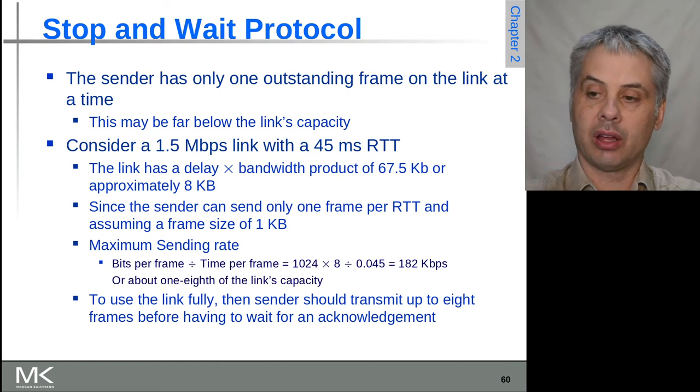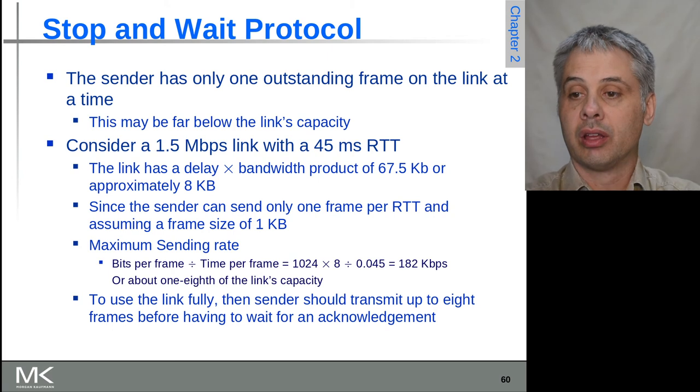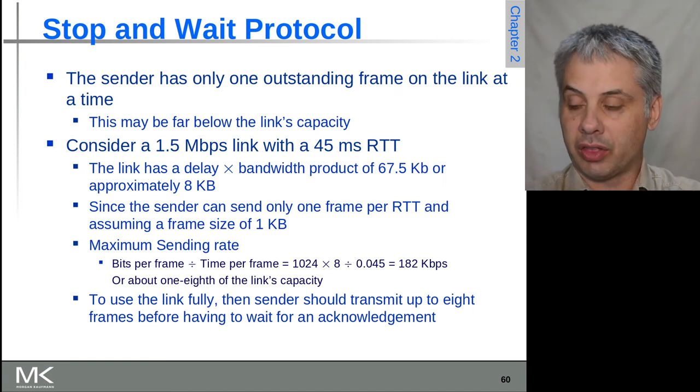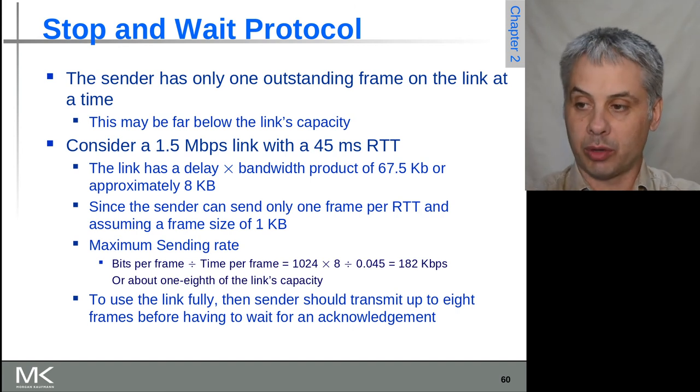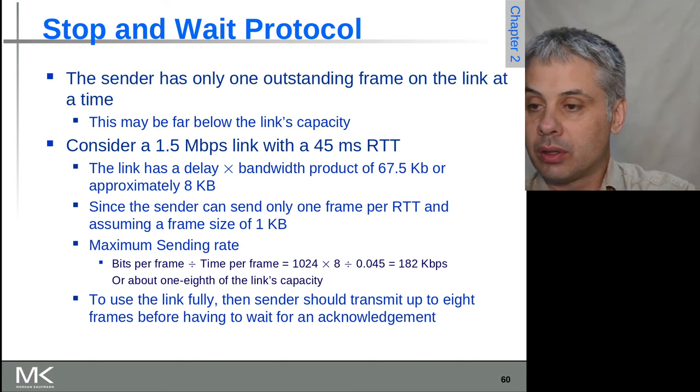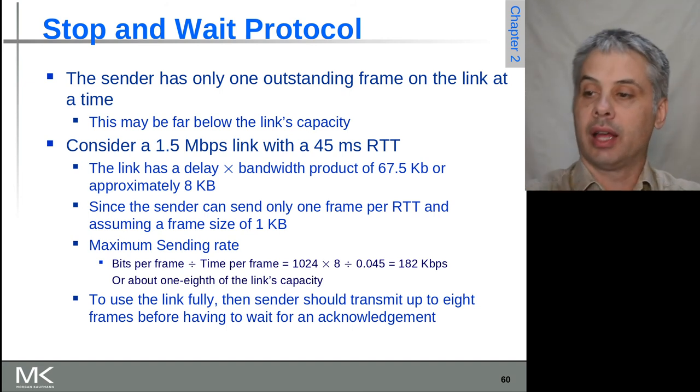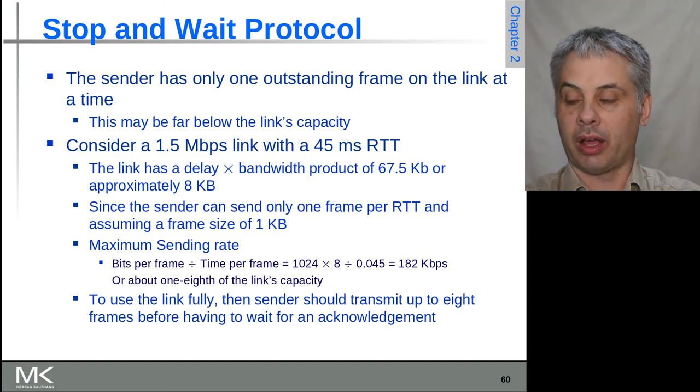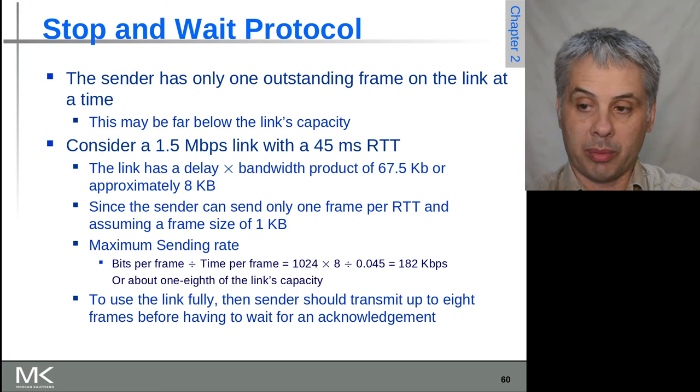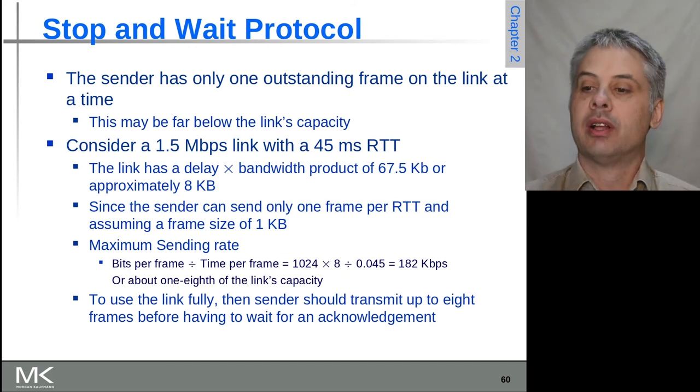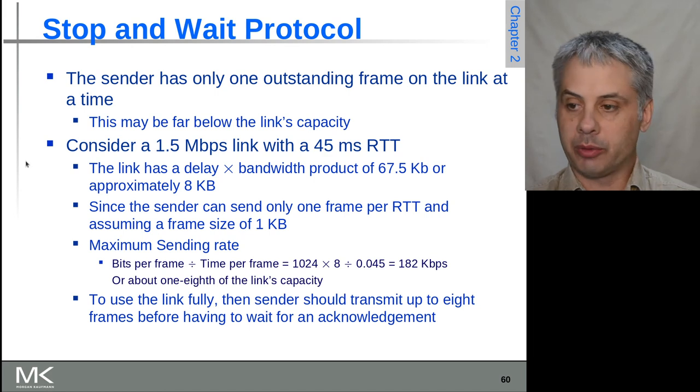The calculation here on the slide shows the bits that we can send in a frame. If it's one kilobyte, that's 8192 bits divided by the time per frame, 45 millisecond round trip time. We can express that as 1024 bytes times eight for the bits to get 8192, dividing by the frame rate gives us 182 kilobits per second. As we said, this is about one eighth of the link's capacity because we're only using one eighth of the bandwidth delay product. This means we need to have more frames outstanding if we want to be able to use the link to its full capacity.